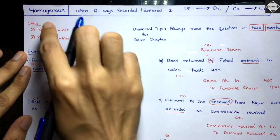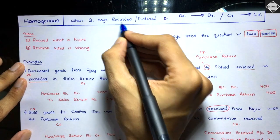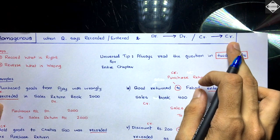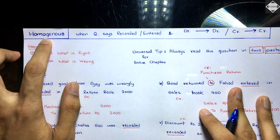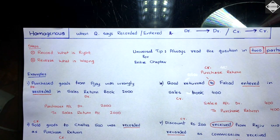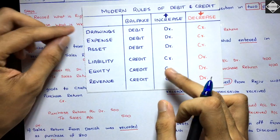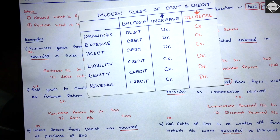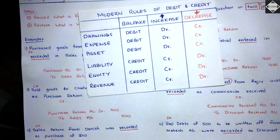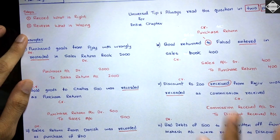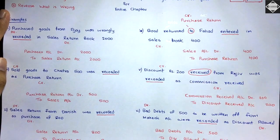Summary of homogeneous errors: When terms like 'recorded', 'entered', 'passed' appear and debit goes into debit or credit goes into credit — same boundary — it's a homogeneous error. Two steps to rectify: record what is right, reverse what is wrong. But you can only do this correctly if you can classify items using the DEALER classification and know what kind of balance each item has. Your basics must be strong to apply these tricks.